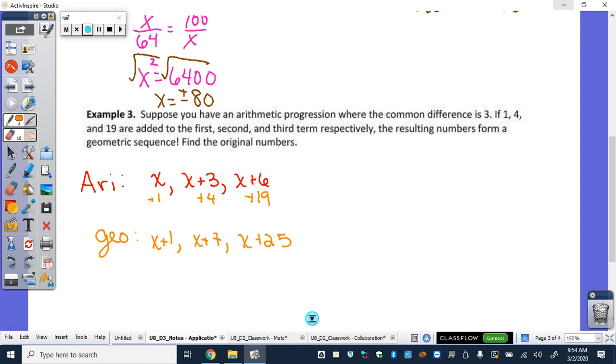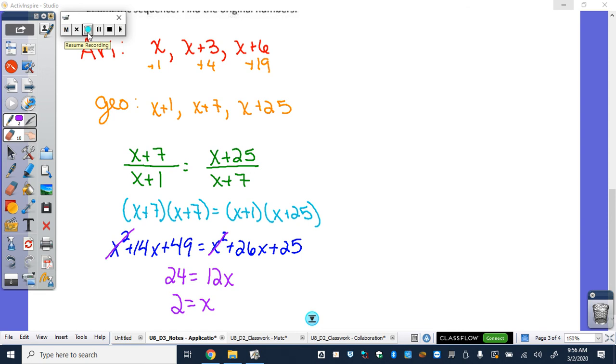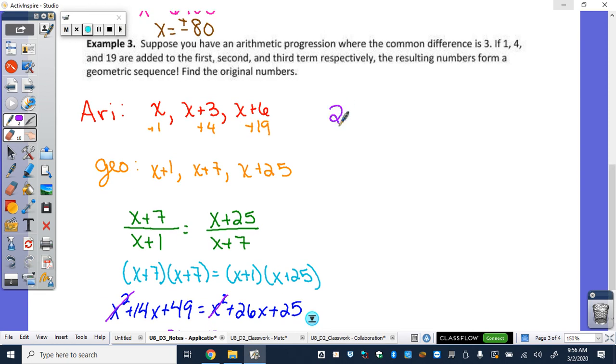So, what could we do using that geometric sequence to find the value of x? We've got to set up to cross multiply like we just did in the last one. So, second term over the first term equals the third term over the second term. So, I'll give you a few minutes. Go ahead, cross multiply, try to solve that. So, you should end up with x equaling 2. So, then the question again, they wanted to find the original number. So, if x is 2, we got a sequence of 2 plus 3 is 5 plus 3 is 8. So, the original numbers are the numbers from the arithmetic sequence. So, 2, 5, and 8.